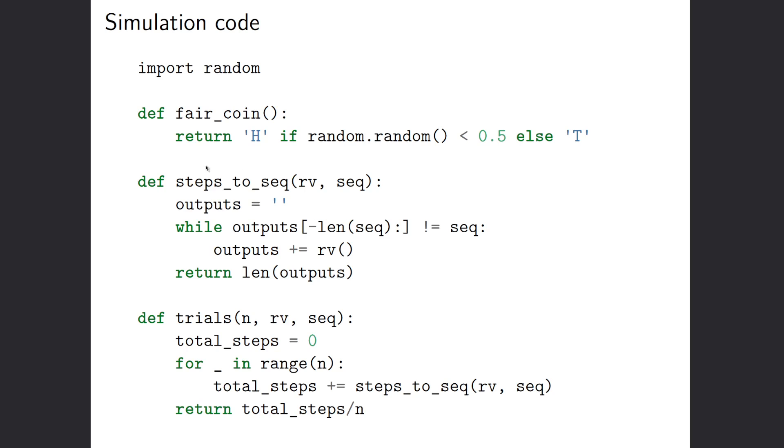And then we have this steps_to_seq function where we pass our random variable in. We have our outputs. And while the output does not end in our sequence, we're going to keep flipping coins. And then we just return the number of times that we had to flip coins to get that output, so the length of the output string.